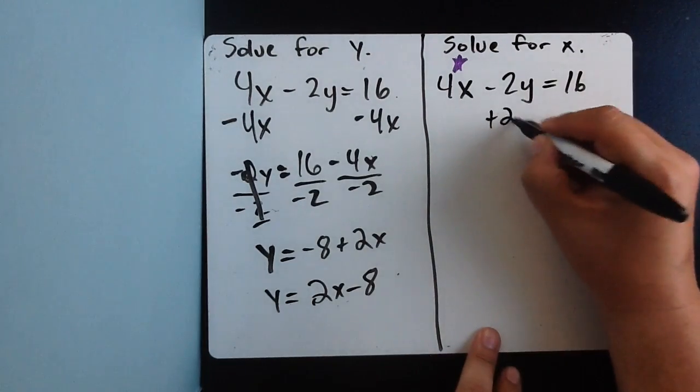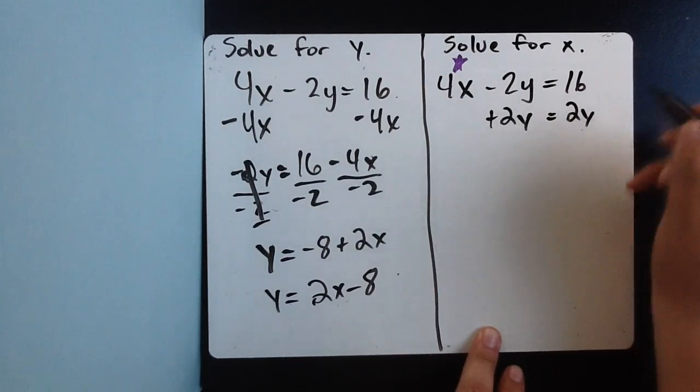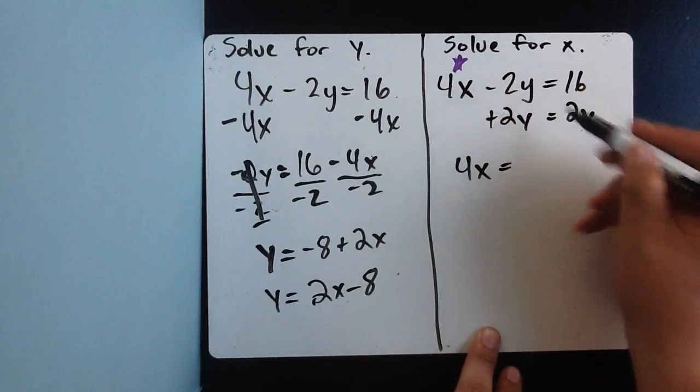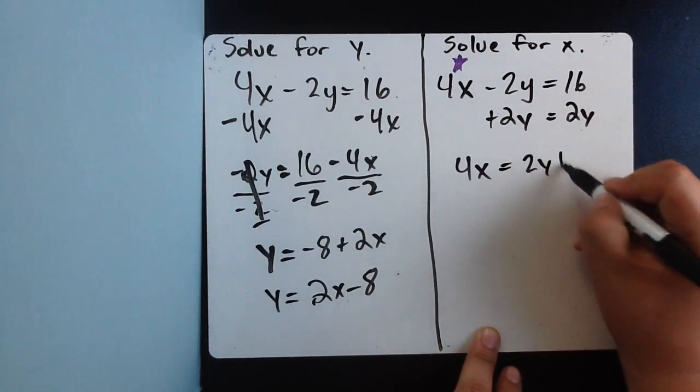So, the first thing I'm going to do is add 2y to both sides. And when I do that, I'm left with 4x equals, that's a zero pair, 2y plus 16.